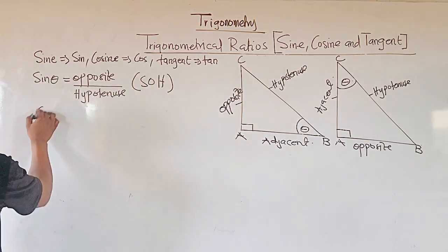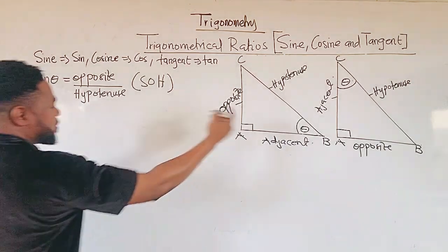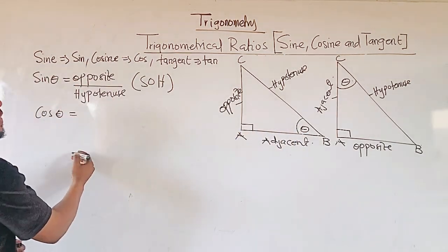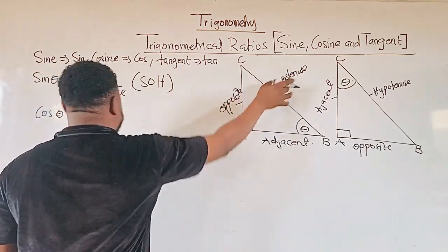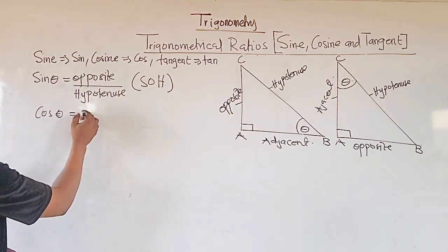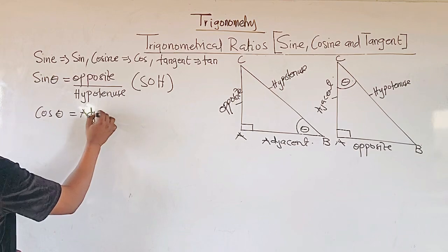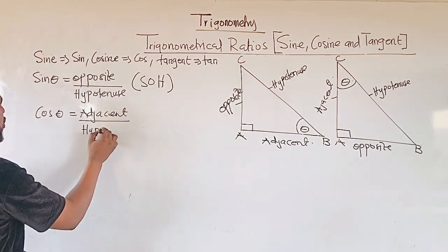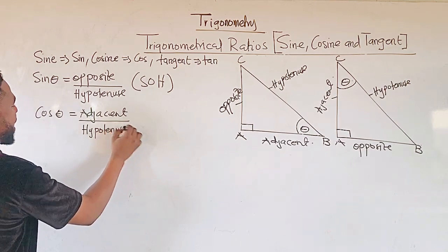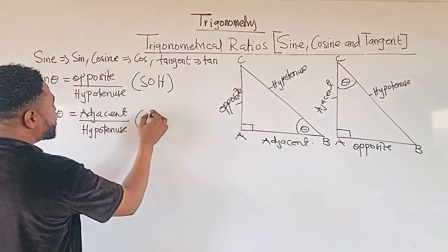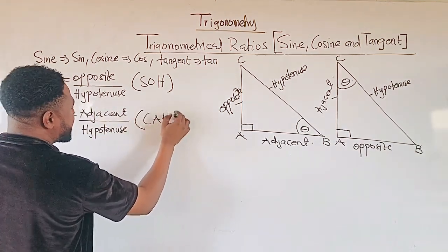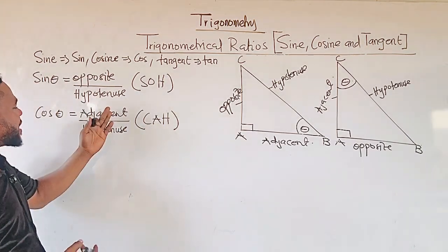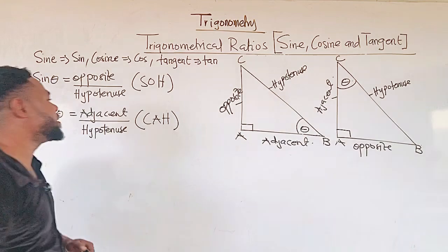Now let us take our cosine. Cos theta takes adjacent and hypotenuse, and we write them in ratio form: cos theta equals adjacent divided by hypotenuse. In short, we name it CAH — so when we say CAH, you respond: cos theta equals adjacent over hypotenuse.